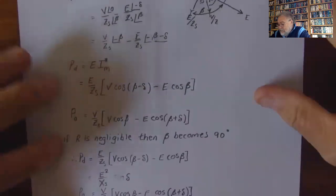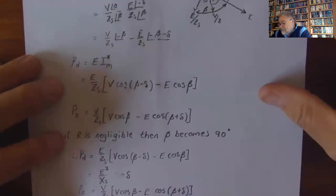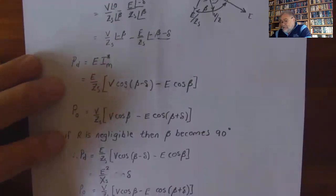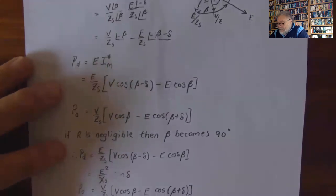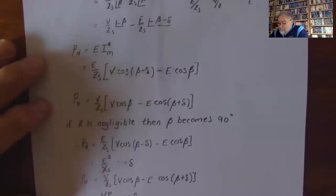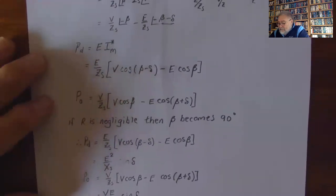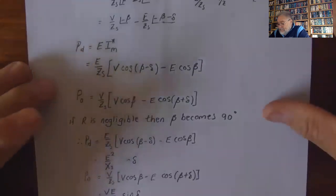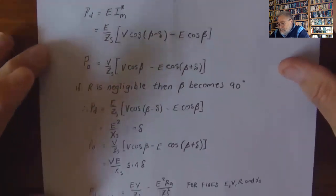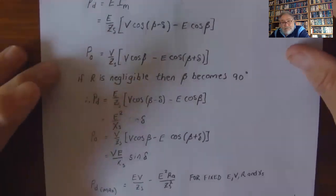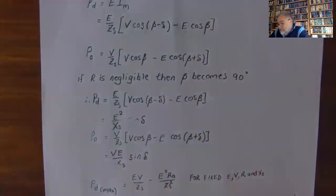If R is negligible, then beta becomes 90 degrees and therefore P_developed equals E squared over X_s times sin delta, and the output also becomes V times E over X_s times sin delta.